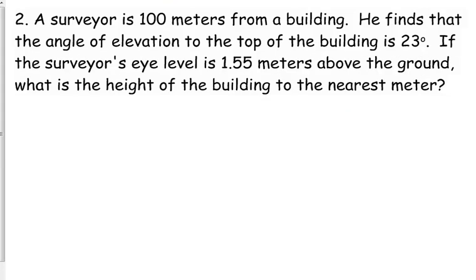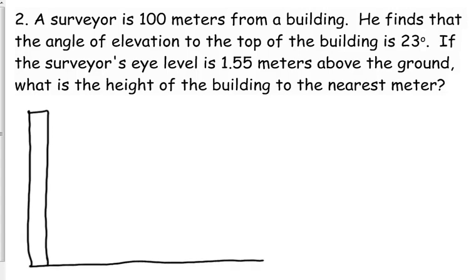A surveyor is 100 meters from a building. He finds that the angle of elevation to the top of the building is 23 degrees. If the surveyor's eye level is 1.55 meters above the ground, what is the height of the building to the nearest meter? So let's set up this problem. We have a building. Yes, I drew a very skinny building. The surveyor is standing over here 100 meters away.